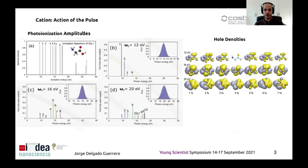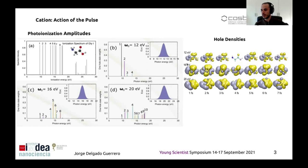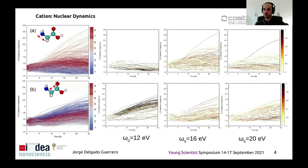Here we present the ionization spectrum of glycine at different eigenstates, showing how the spectra change as we include pulses with different central frequencies. Using a pulse with a central frequency of 12 eV mainly populates the lowest cationic states, while higher energies populate higher cationic states. Importantly, with 16 eV it is more probable to populate higher cationic states than with 20 eV. This gives rise to different hole densities depending on the pulse energy. We observe the evolution of CN and CC distances for the 1,000 trajectories.